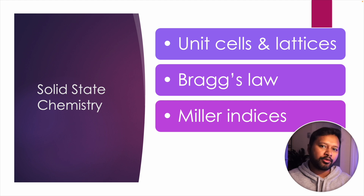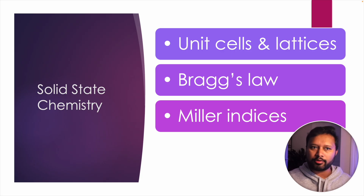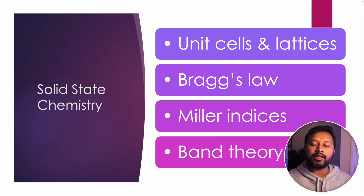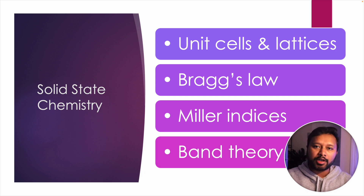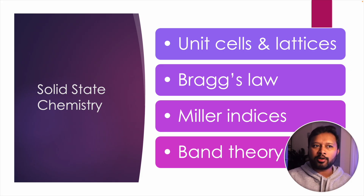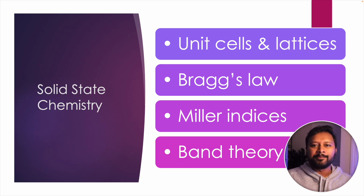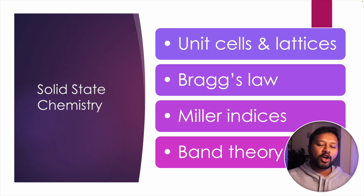The next thing is Miller indices, which has been asked many times in CSIR-NET. If you don't know how to do them, there is a video on my YouTube channel. Then comes band theory — you can consider it as the end of solid state chemistry — which includes concepts of insulator, conductor, and semiconductor, doping, and Fermi levels. Solid state chemistry is essentially a combination of these four major topics, so try to finish them.